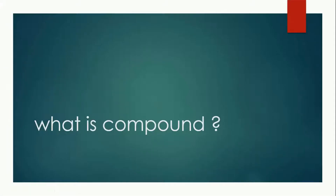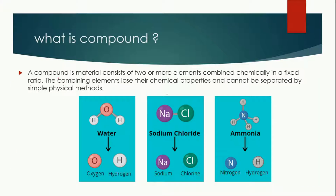Hey learners, today we will study about what is a compound. A compound is a material which consists of two or more elements which are combined chemically in a fixed ratio. It means when a compound is formed, two or more components they will combine chemically and they will be present in a very fixed ratio.